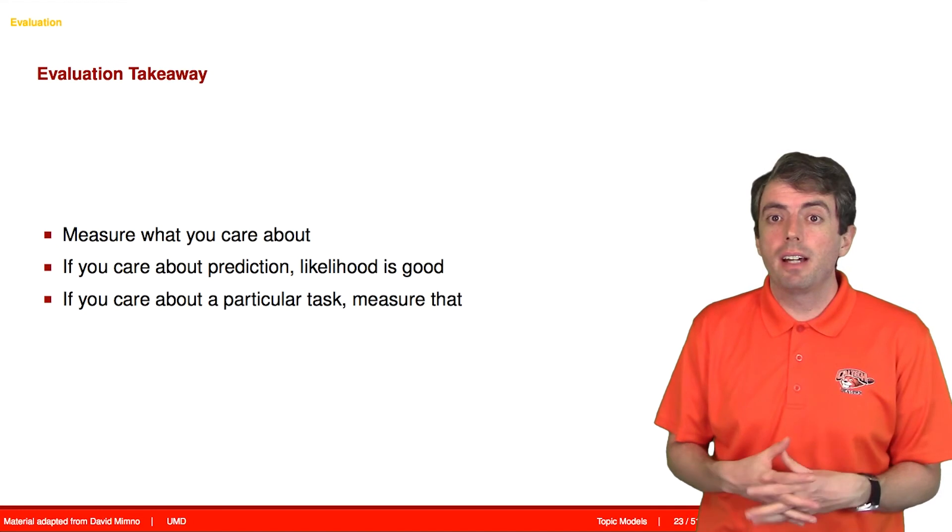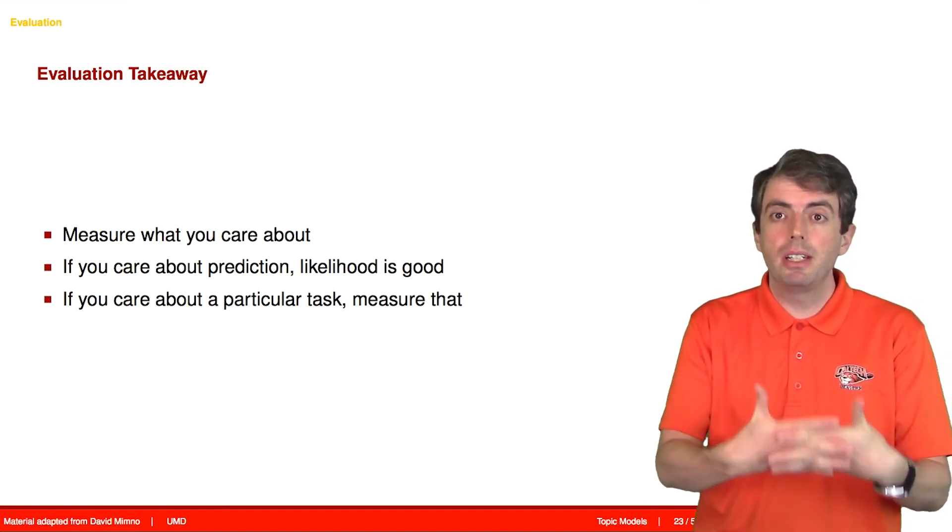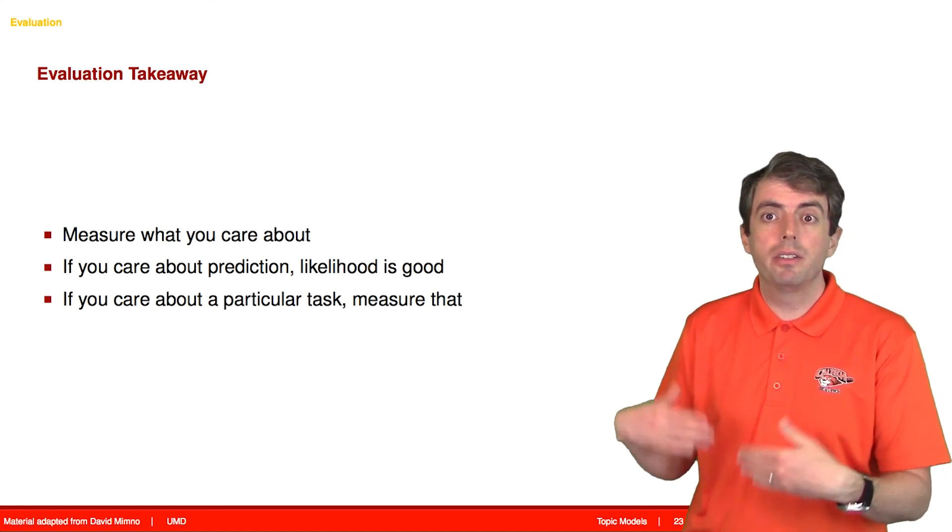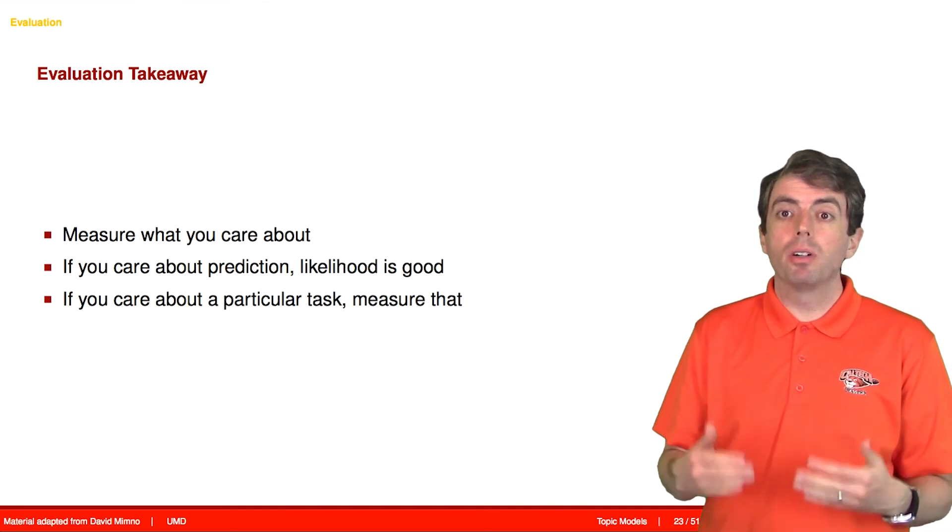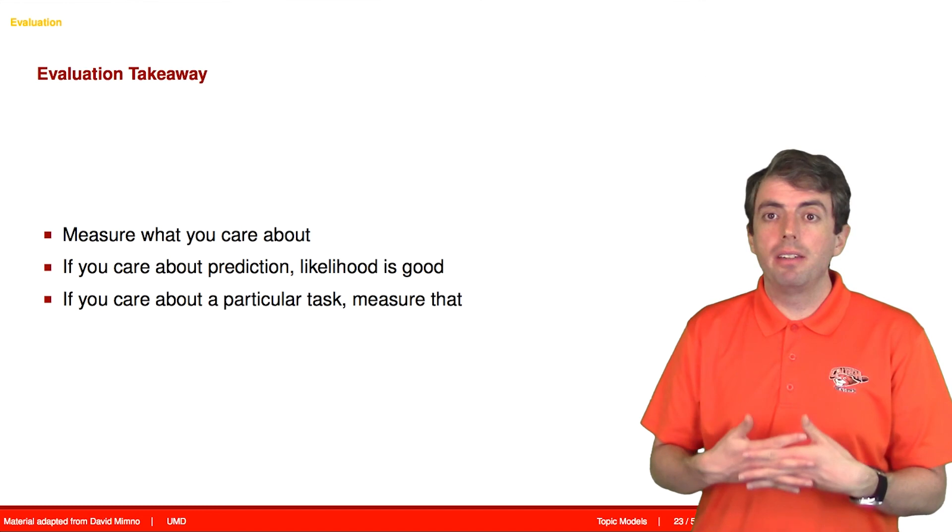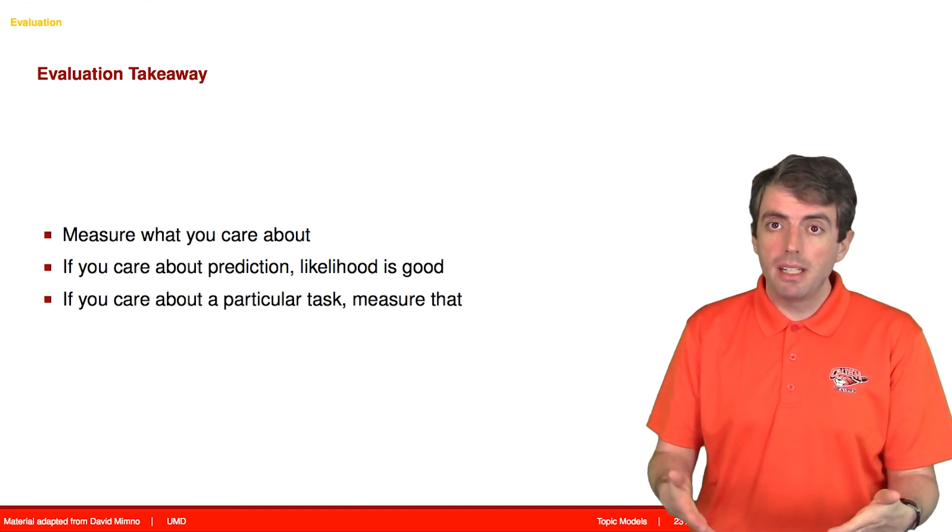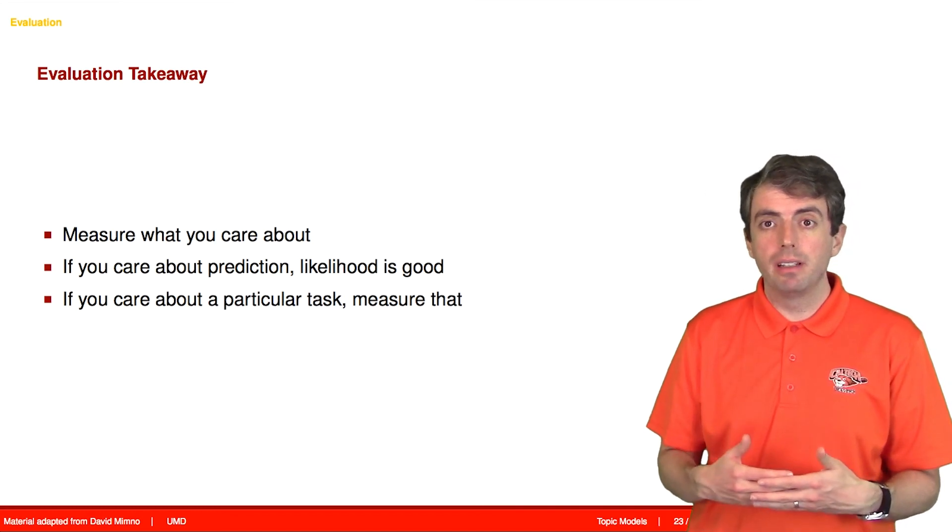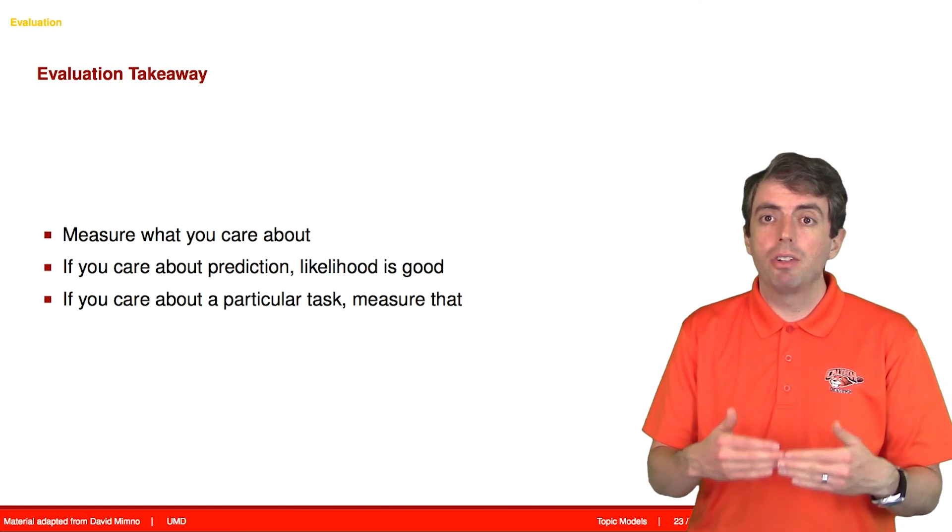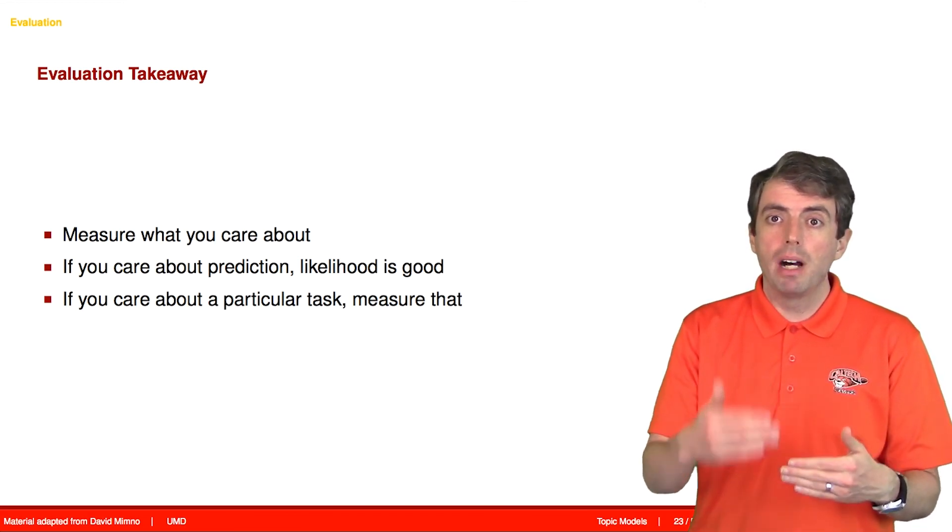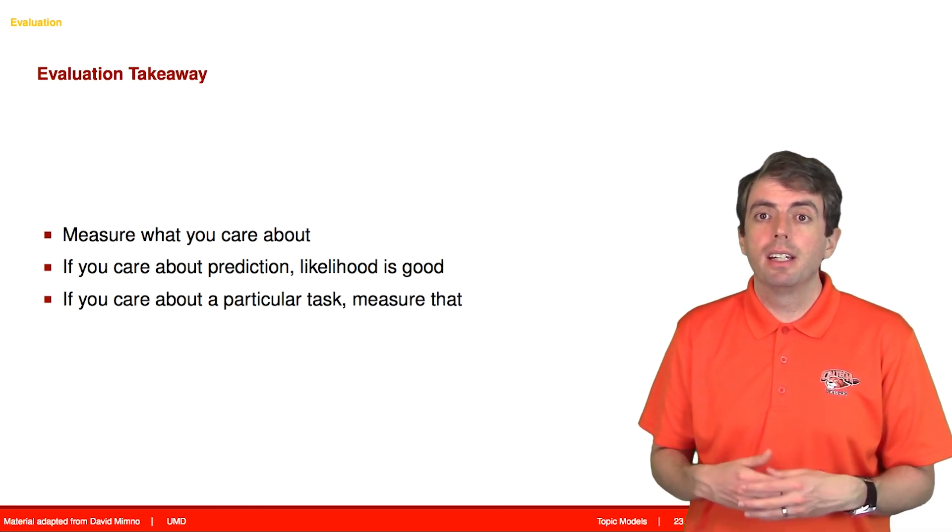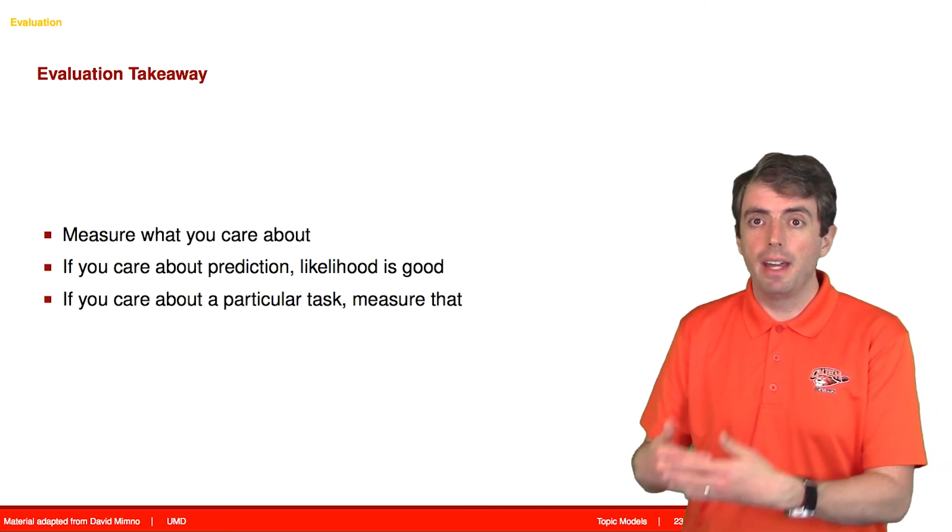In other cases, you're using the topic model for some other task. Maybe you're doing machine translation or you're doing sentiment analysis. If that's the task that you care about, then you should measure the performance on that. In any event, the moral of the story is still the same. You should measure what you care about. If you care about the ability of a model to predict a word, then by all means measure held-out likelihood. If you care about the ability of your model to tell a story, then you should measure that directly by measuring how interpretable your model is. How much a human can make sense of your model. If you're interested in some other task, you should measure the performance of your model on that task.